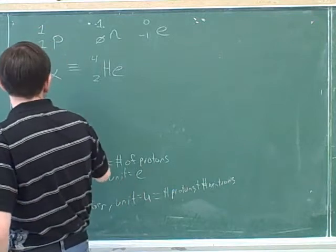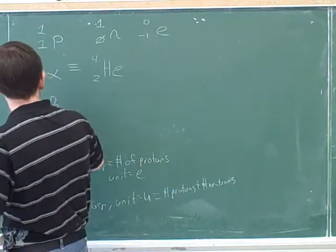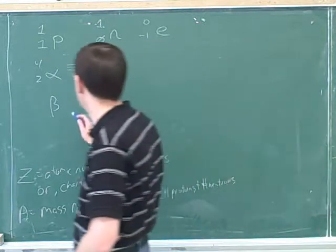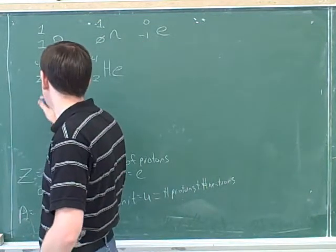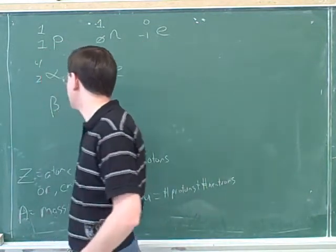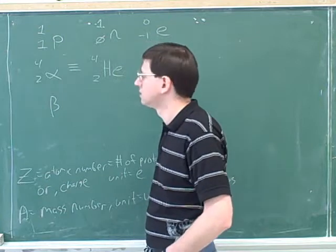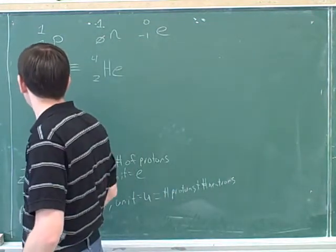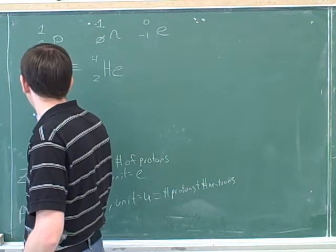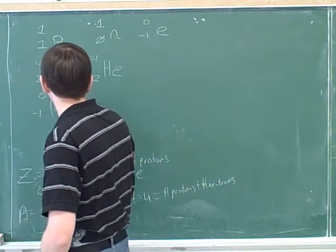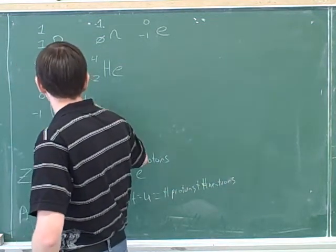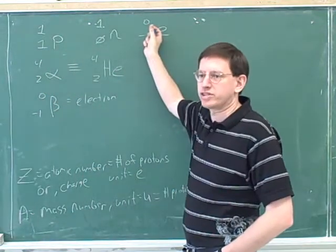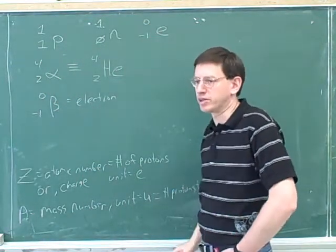You might also hear about beta particles. A beta particle turns out to be an electron. So what should A and Z be for a beta particle? A should be zero and Z should be negative one. Those are the numbers we've already learned for electrons — that's a beta particle.